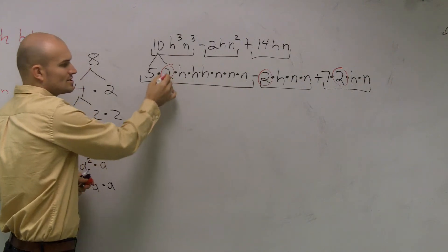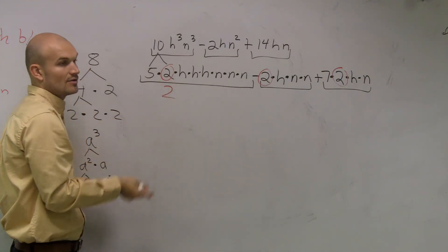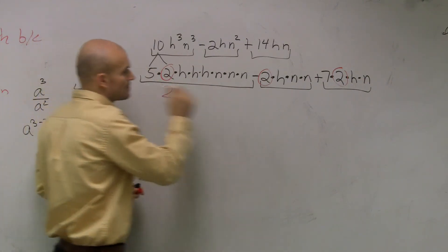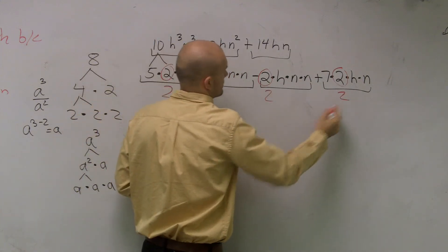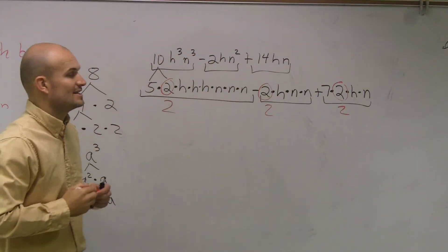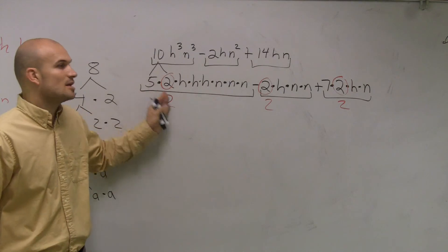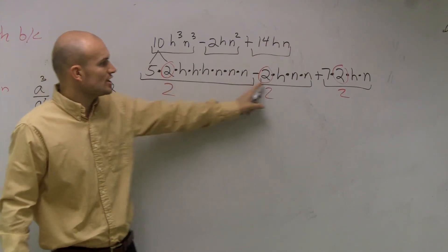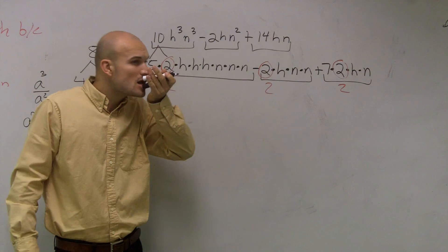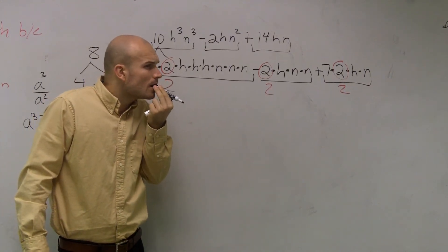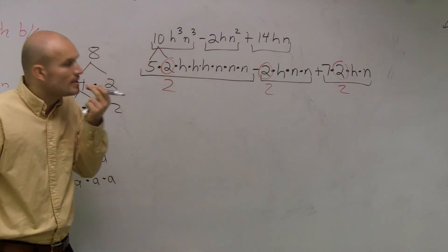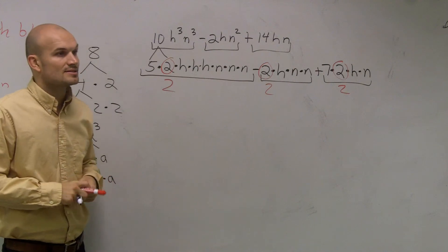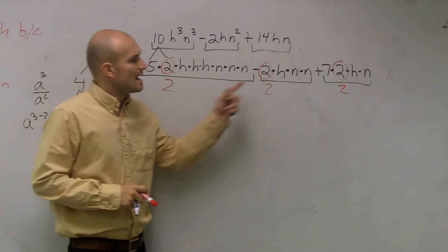So what we do is we kind of like divide out by a 2. Okay? So if I divide by 2, what's 2 divided by 2? That cancels out, right? Yes? What do you mean? The largest number that can divide into all of those. The highest number that they all share. The highest number that these all share is a 2. Yes? When you do that, are you going to take out the 2 and the h and the n? Now we're going to look at the h's and the n's. Okay? So let's think about it.